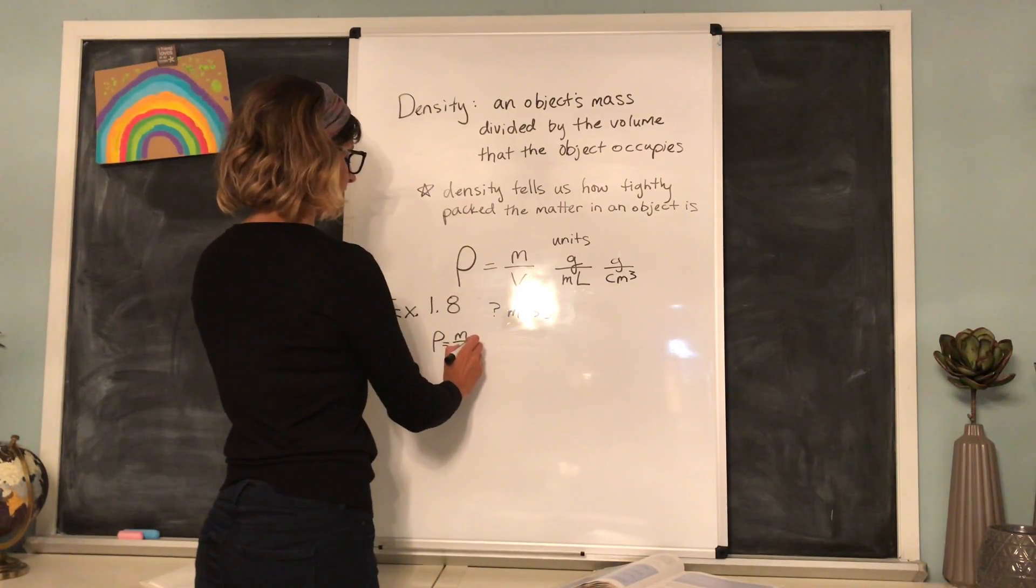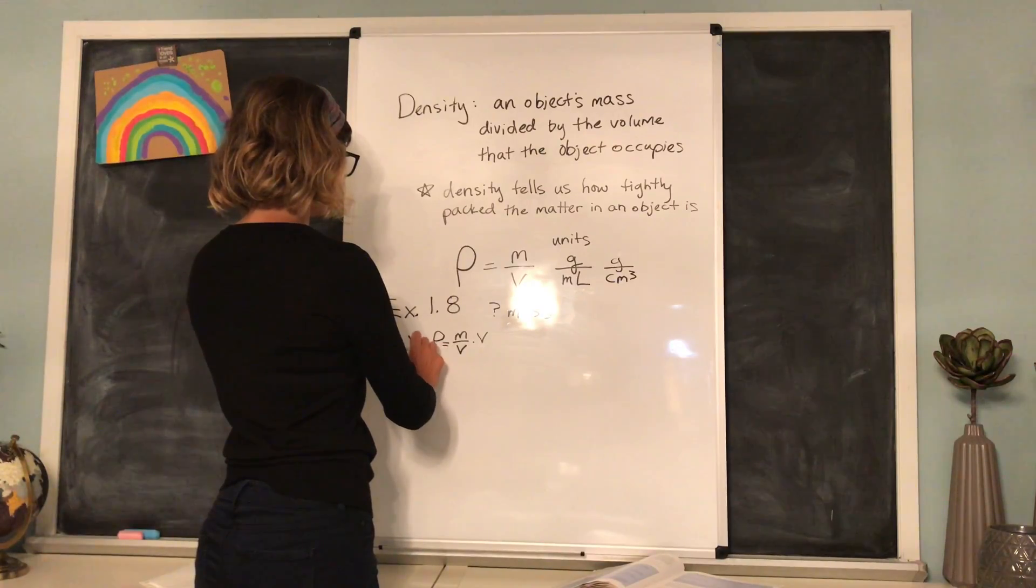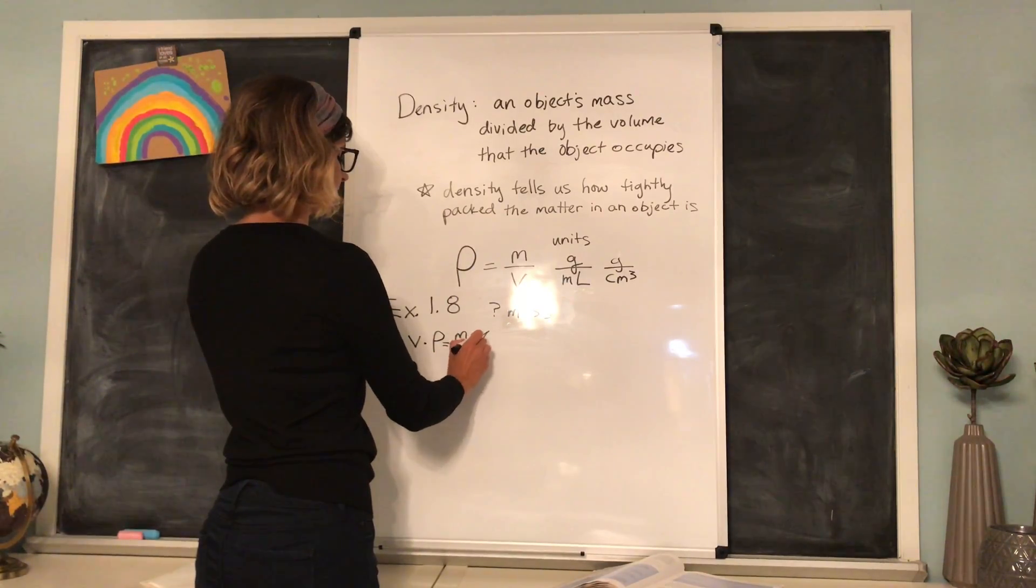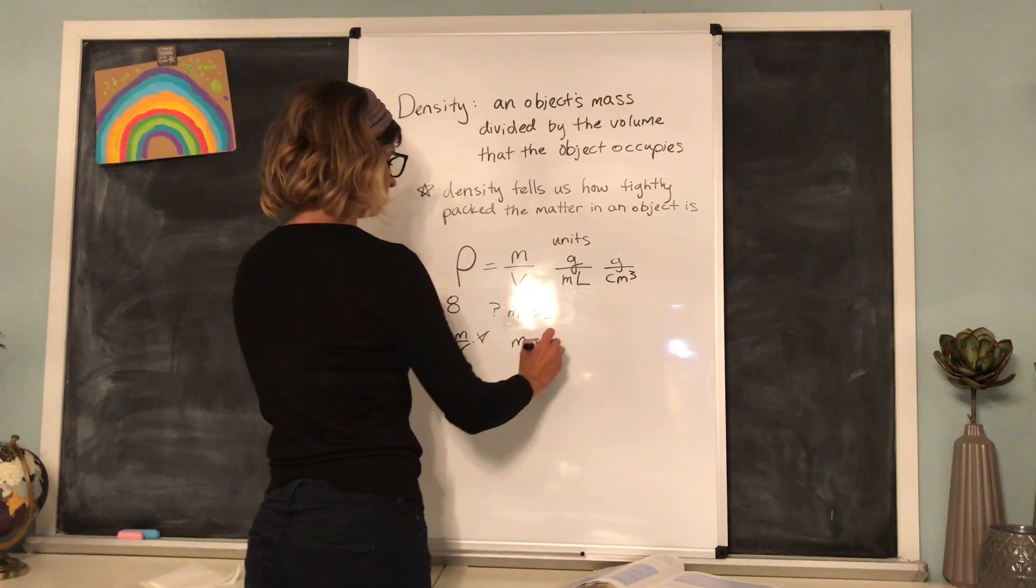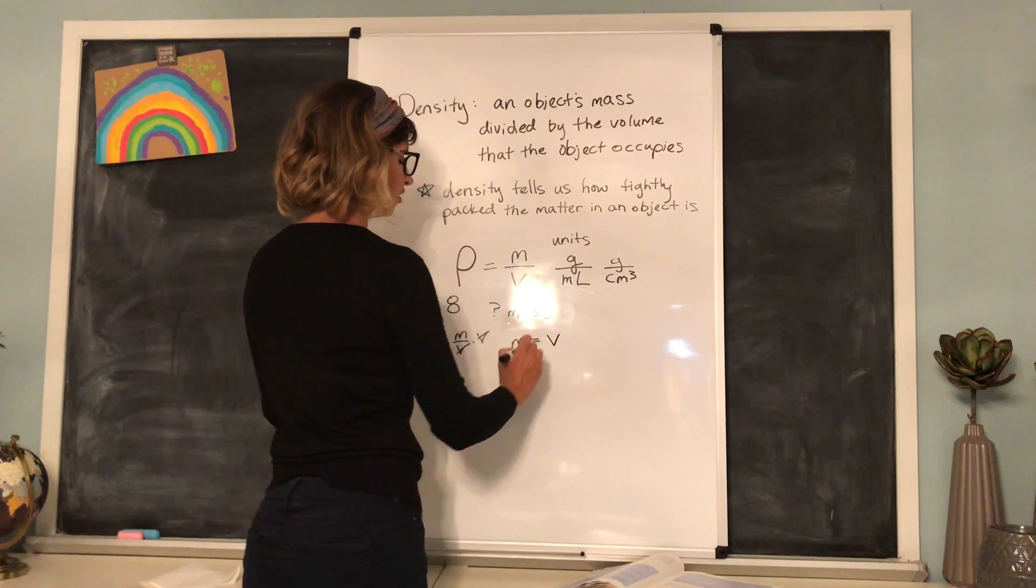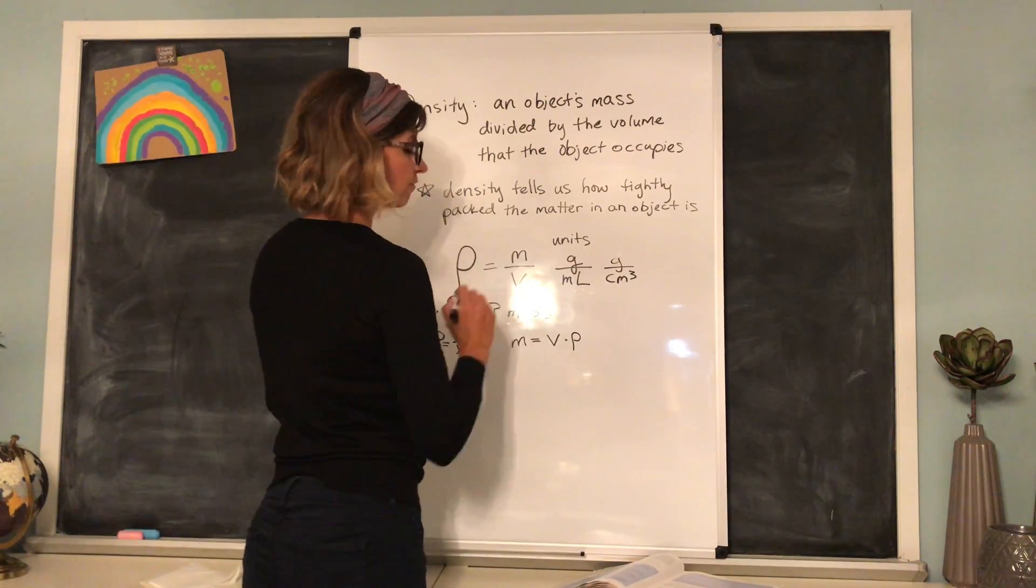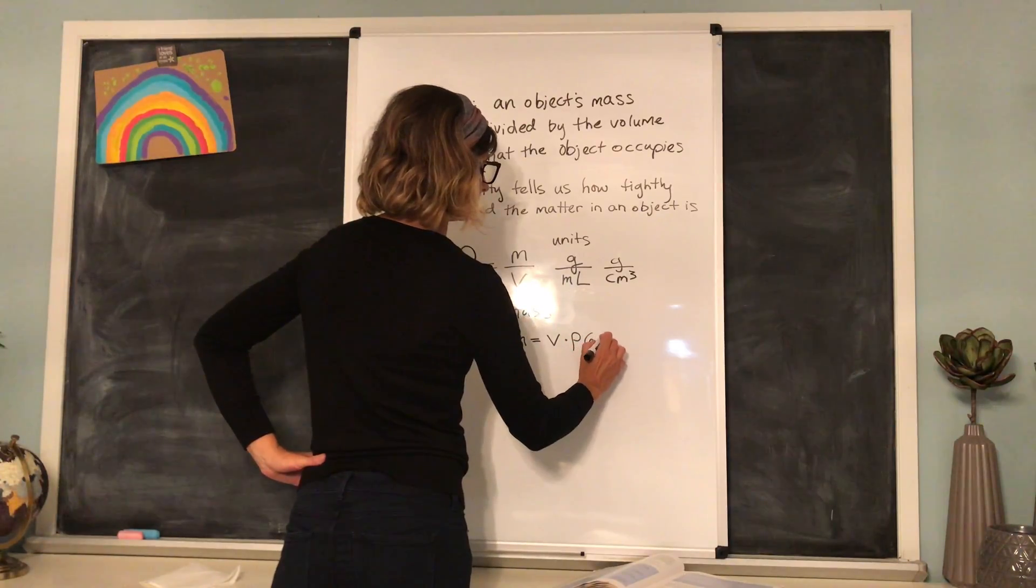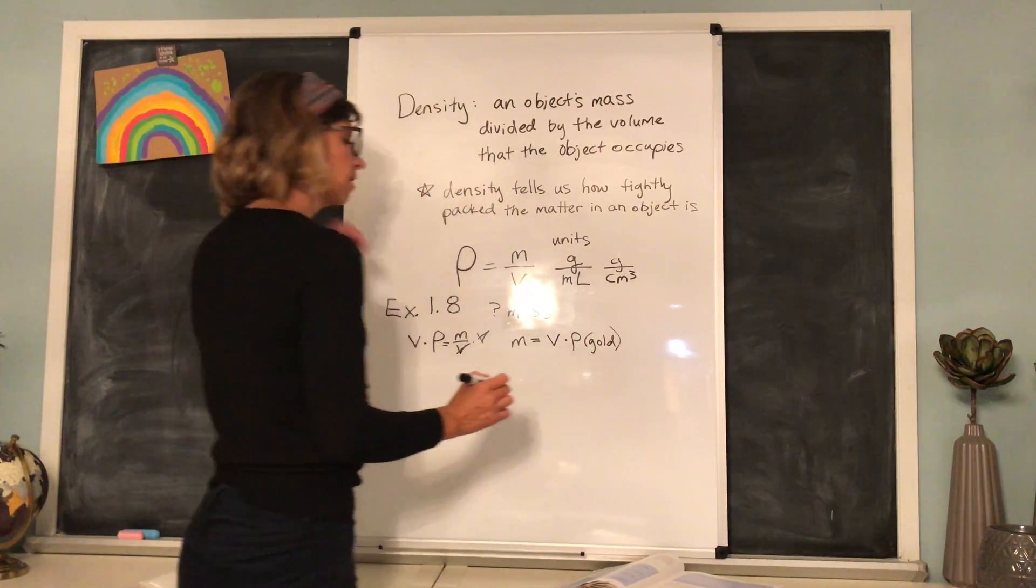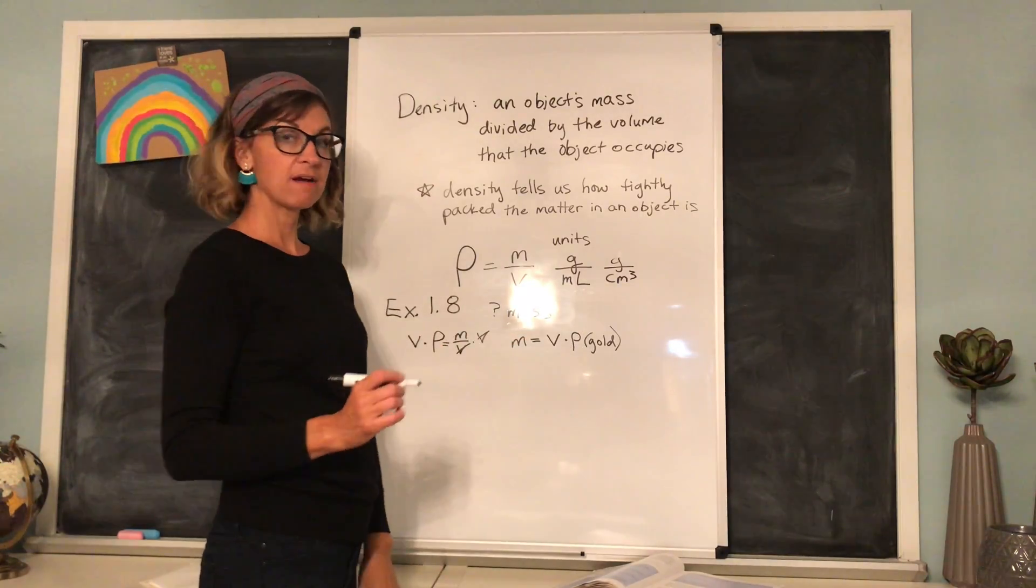If we multiply this side by the volume, we need to multiply this side by the volume. Vs cancel out here. So the mass is going to be equal to the volume times the density of gold. I'll write gold in here. Times the density of gold. So now we just have to fill in our values here.